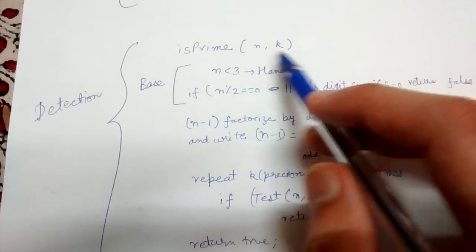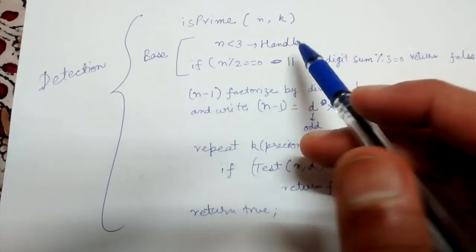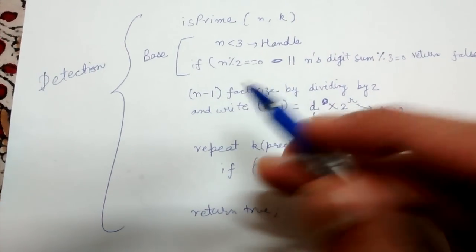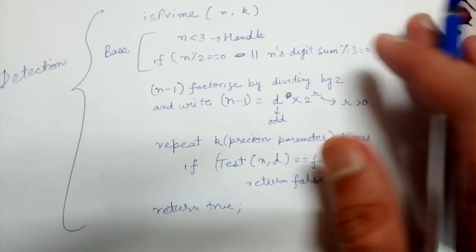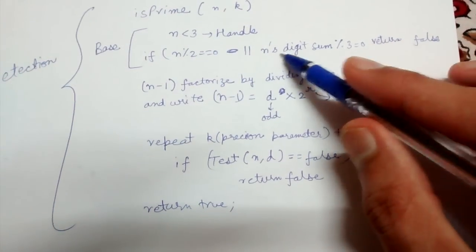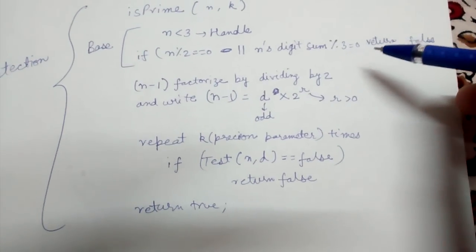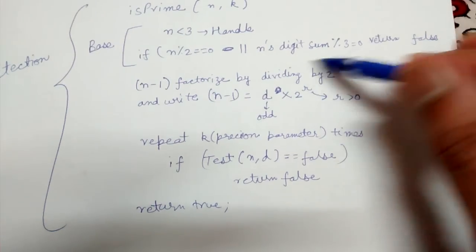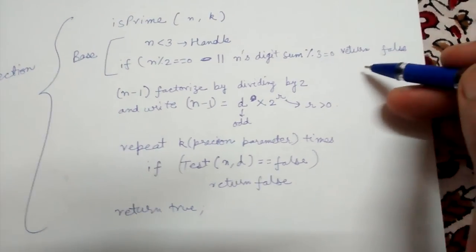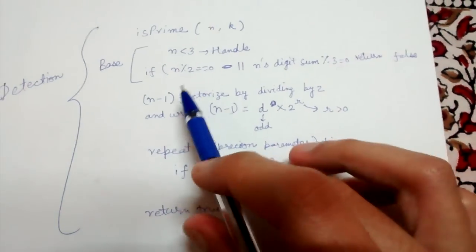The is_prime function is passed two parameters: the number n and the precision level k. We quickly handle the base cases — for n less than 3, and if n modulo 2 equals 0, meaning the number is even, it can't be prime because it is divisible by 2. We can also quickly implement the divisibility-by-3 test: if the digit sum is divisible by 3, then the number is also divisible by 3. In both these cases we return false, since the number is not prime.